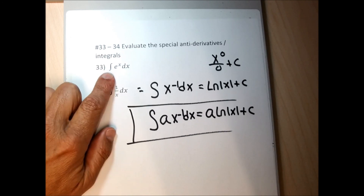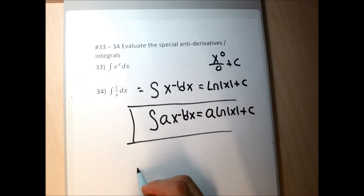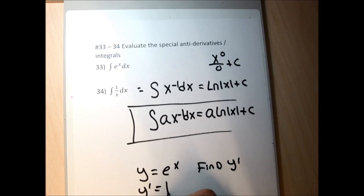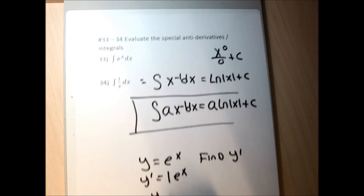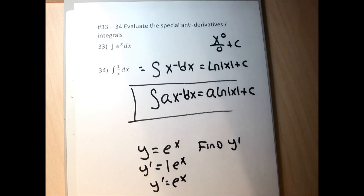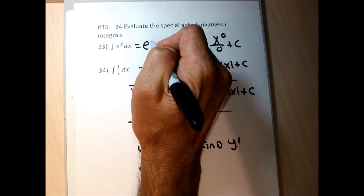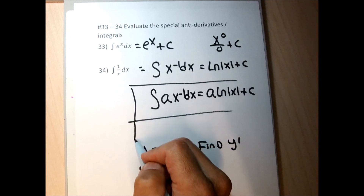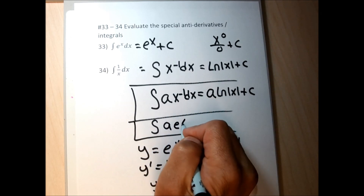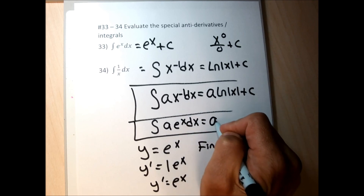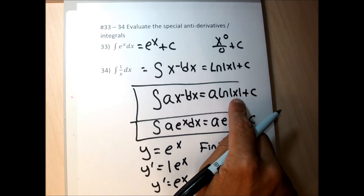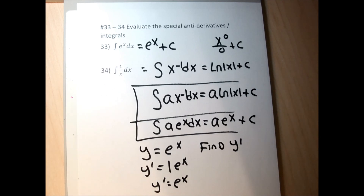There are two special cases where we don't use the power rule for integration. First: 1 over x (x to the negative 1), whose integral is the natural log of x plus C. Second: e to the x is also a special case. The derivative of e to the x is just e to the x — the derivative of the exponent is 1, times the function — so the integral of e to the x is e to the x plus C. More generally, the integral of any number times e to the x dx is that number times e to the x plus C.